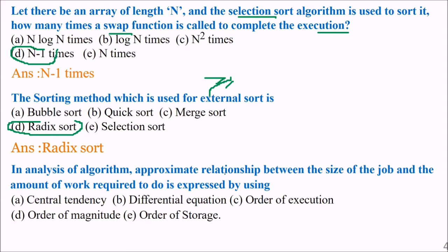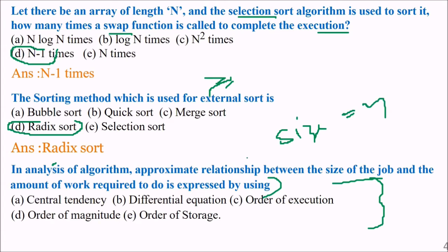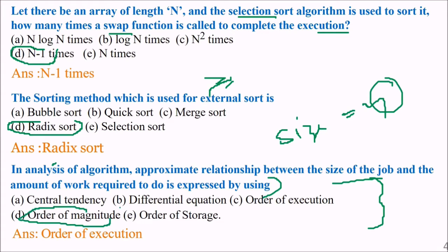In the analysis of an algorithm, the approximate relationship between the size of the job and the amount of work required to do it is expressed using what? The answer is order of execution. Generally you will see it expressed with Big O notation — say n squared, n cubed, etc.